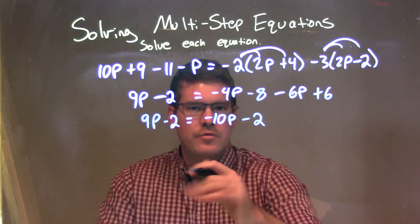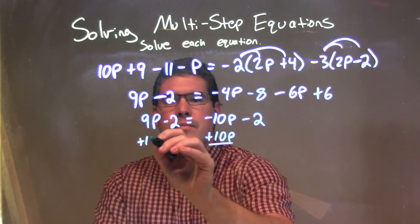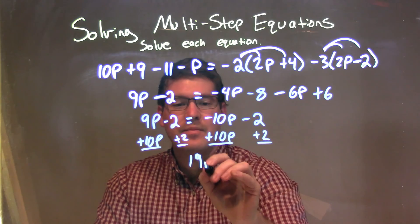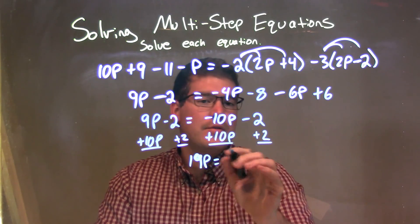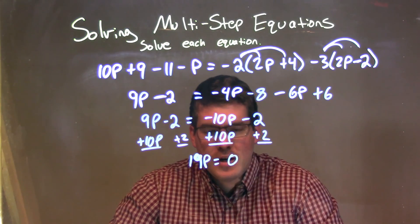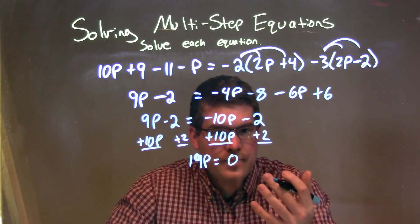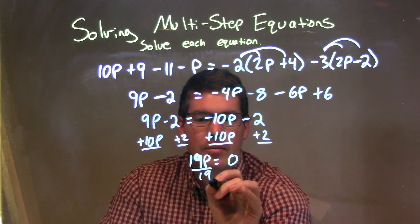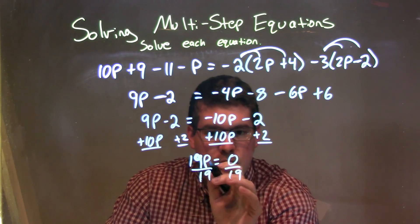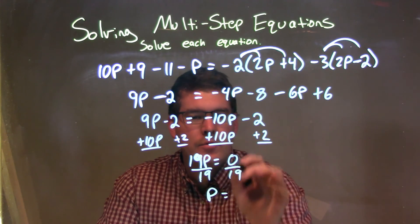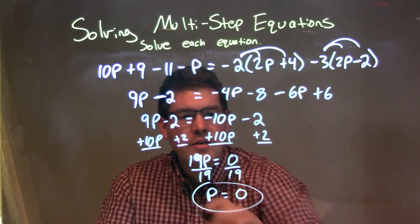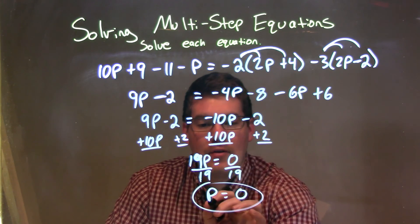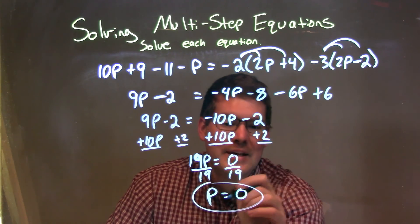What I'm going to do is bring my variables to the left and my numbers to the right. I'm going to add 10p to both sides and add 2 to both sides. That leaves me with 9p plus 10p, which is 19p. And negative 2 plus 2 is 0. Be careful here — a lot of times students, when they see 0, get freaked out if the answer is 0. But don't just jump there; understand why. If I divide by 19 on both sides, I'm going to have p by itself. That equals 0 divided by 19, which is 0. So in this case it does equal 0, but by doing that step it shows we really understand how p becomes 0.